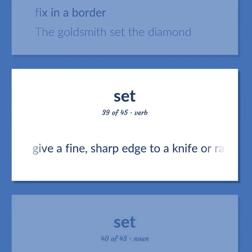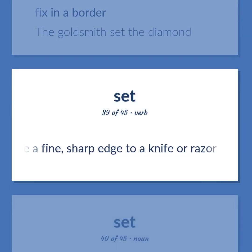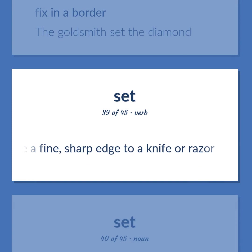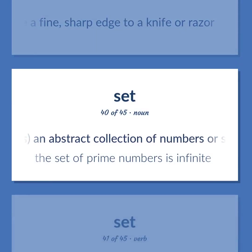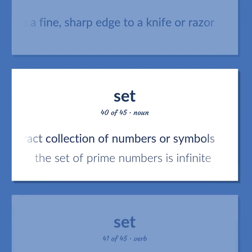Give a fine, sharp edge to a knife or razor. Mathematics: an abstract collection of numbers or symbols. The set of prime numbers is infinite.